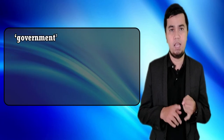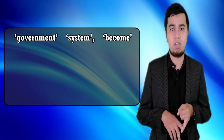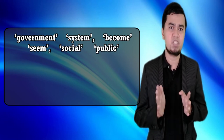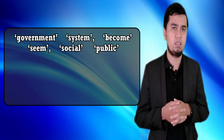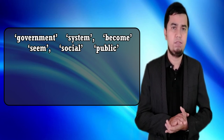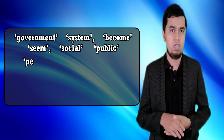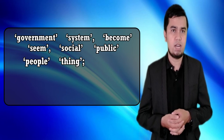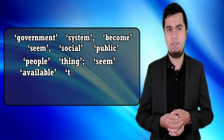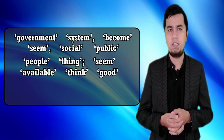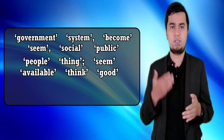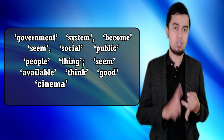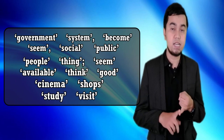The frequency list also has some surprises for teachers. Nouns like 'government' and 'system,' verbs like 'become,' and adjectives like 'social' and 'public' are seldom taught in beginners' courses despite their high frequency. Many of the frequent nouns have vague general meanings like 'people' and 'thing'; many are abstract like 'seem' or 'available,' or involve subjective evaluation like 'think' and 'good.' Typically the first lesson of an elementary course concentrates on specific concrete nouns like 'cinema' and 'shops,' and action verbs like 'study' and 'visit.'